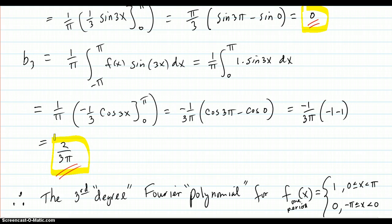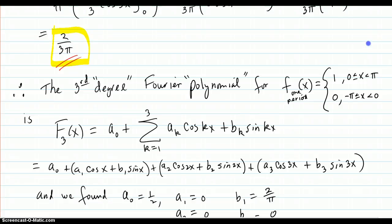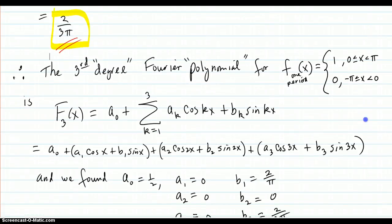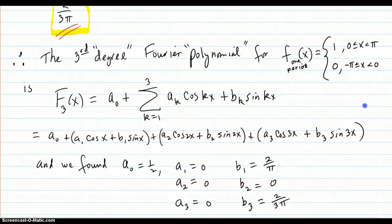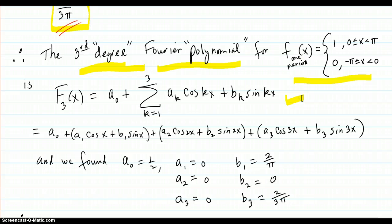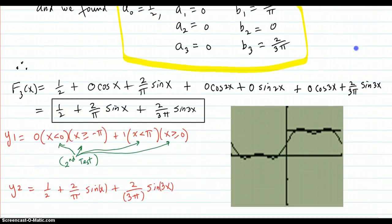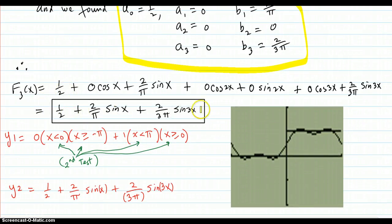This one doesn't have any cosine terms in it, but that's just because of this particular version of the period. In general, you're going to have cosine terms too. So the third degree Fourier polynomial for this period is, in general, equal to this. If you write it out and plug in all the coefficients you just found — A0=1/2, B1=2/π, B3=2/3π — you get the final expression.